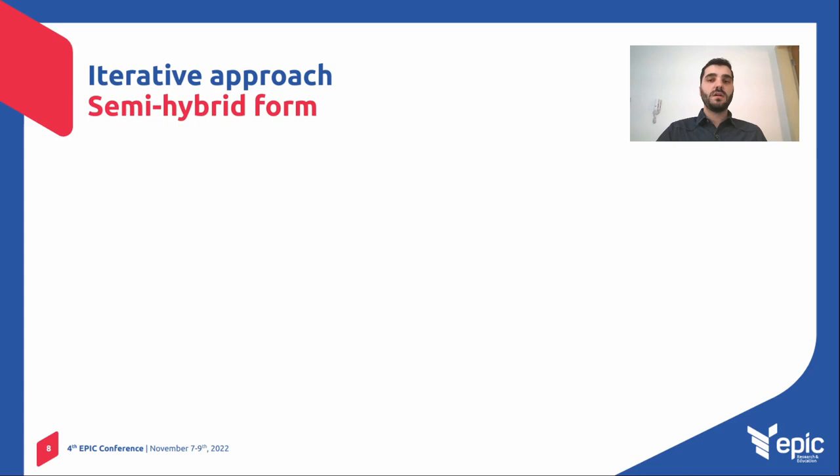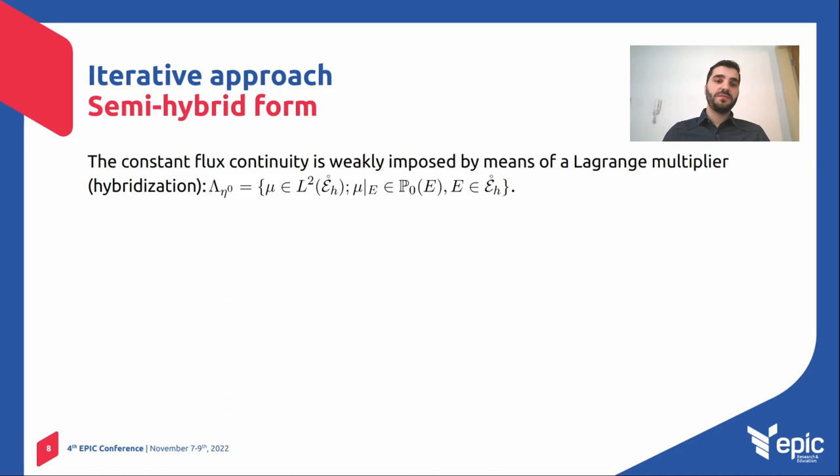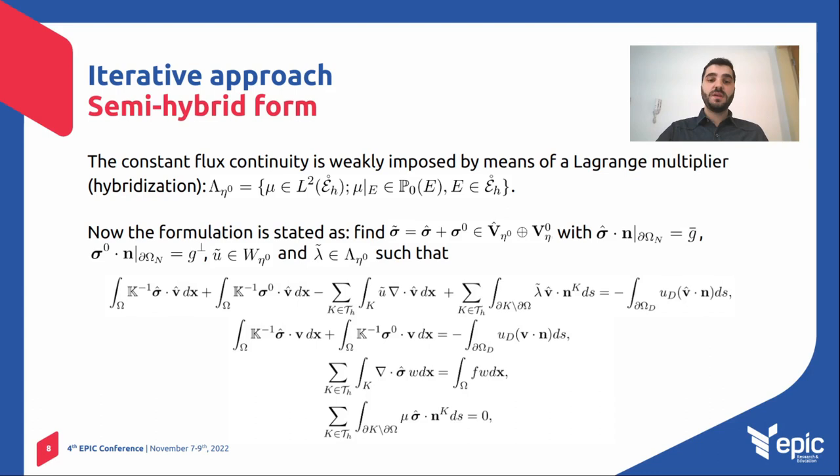But now what we do here is to extend even more our formulation to a semi-hybrid form. More specifically, what we do is to enforce weakly the continuity of the normal flux component by means of a Lagrangian multiplier field.